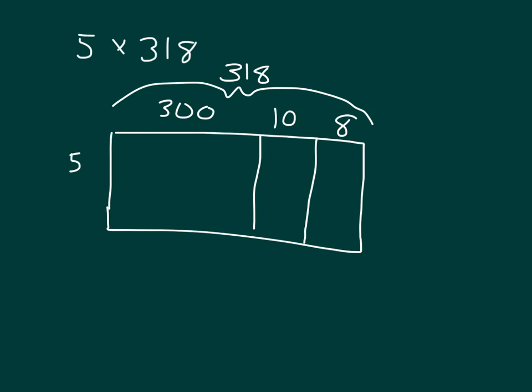Decompose those. It is three hundred eighteen by five for that area model. Let's start with that first piece. That first piece is three hundred times five, or three hundreds times five, which is one thousand five hundred, which is also equal to fifteen hundreds. Next one, we have ten times five, and ten times five is fifty.